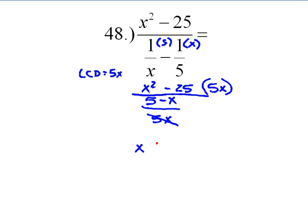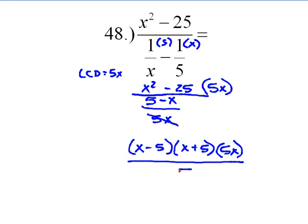So this is perfect squares again. x minus 5, x plus 5, 5x over 5 minus x. Now the x minus 5 and 5 minus x will cancel as long as I multiply the top by negative 1. So carry that negative 1 into your answer.